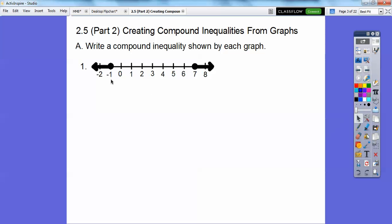So write a compound inequality shown by each graph. In the last lesson, I told you what typical kind of graph this is. Is it an AND statement or an OR statement? Typically, when it goes in opposite directions, this is an OR statement. So this one's going to be included, so it's going to have an equals bar, and you say this side first. X is less than or equal to negative 1, OR, and you've got to say the word OR, X is greater than or equal to 7. Easy, right?